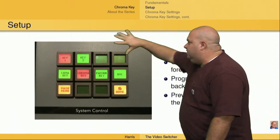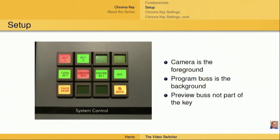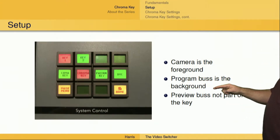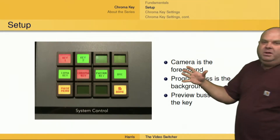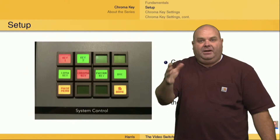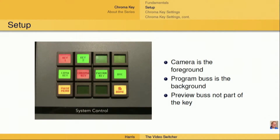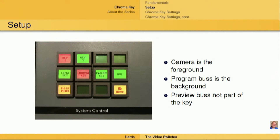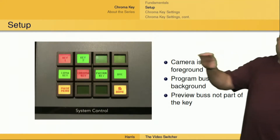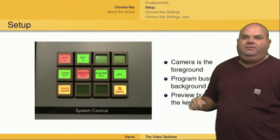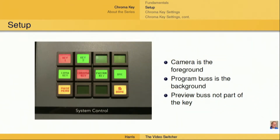Then what happens is the graphics — all of the information that's going to replace the green screen — is going to be the background, selected on the program bus of the switcher. In this particular example, I have a camera in the key bus of my effects key, and on the program bus I have the output of my computer, which is generating these graphics. The preview bus is actually not a part of the key at all. Some people get confused and feel like the camera will be on the program bus and the graphics on the preview bus, but that's actually not the case when it comes to a chroma key.